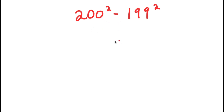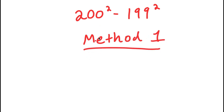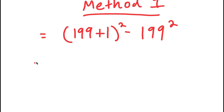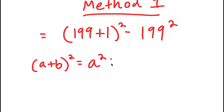For method number one, what I'm going to do is rewrite 200 squared as 199 plus 1, quantity squared. So now I have 199 plus 1, quantity squared, minus 199 squared. And if I have something in the form a plus b squared, this is equal to a squared plus 2ab plus b squared.